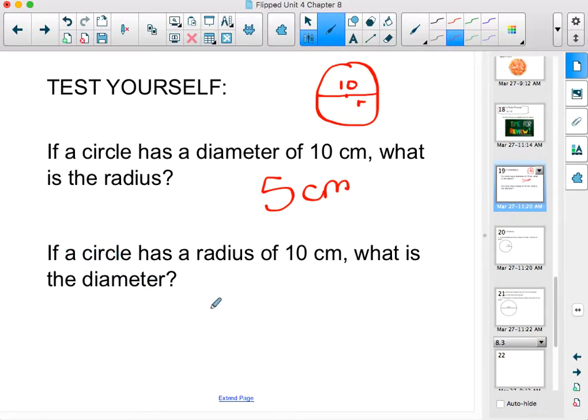Same thing. Number two, if a circle has a radius of 10 centimeters. So if the radius is 10, then what will the diameter be? Well, the diameter is 2 times the radius. So my diameter will be 20 centimeters.